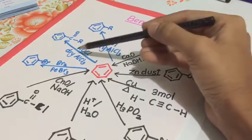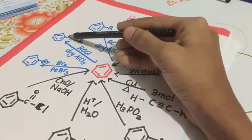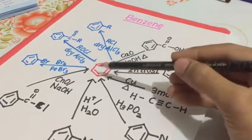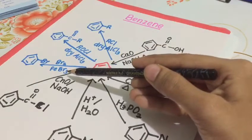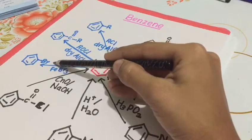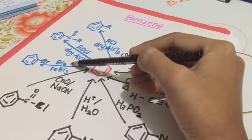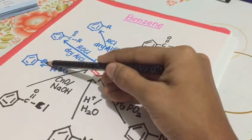Benzene ring added with ROCl and dry AlCl3 gives a benzene ring attached to an acid halide. Benzene with Br2 and FeBr3 gives a benzene ring with Br attached. Instead of Br, Cl2 can also be used to attach Cl to a benzene ring.